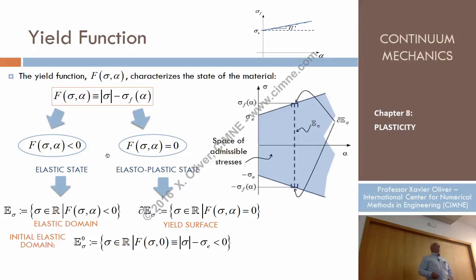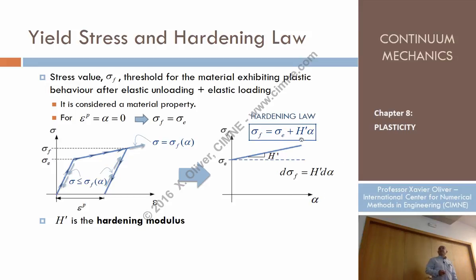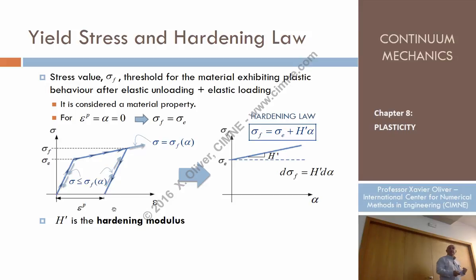Let's review what parameters we have so far. First, Young's modulus, which characterizes the elastic branch. Second, the elastic limit sigma_e, which is the yield stress for the virgin material. Third, the hardening modulus H prime, which provides the yield stress for non-virgin material — material that has already been loaded and unloaded.